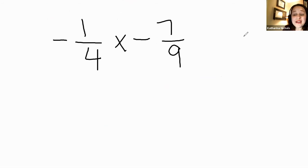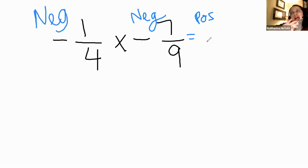Let's try another example. In this problem, we're looking at a negative times a negative. Anytime I have a negative times a negative, my product will be positive. Now that I've established that my product is positive, I can essentially ignore all the negative signs and just multiply these fractions.